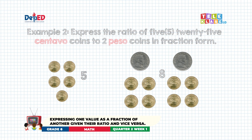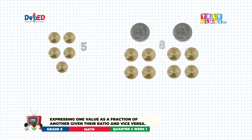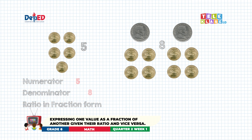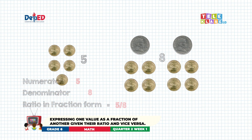Based on the given, we need to express the ratio using fraction form. What would be our numerator? It is five. How about our denominator? It is eight. Therefore, the answer is five-eighths.